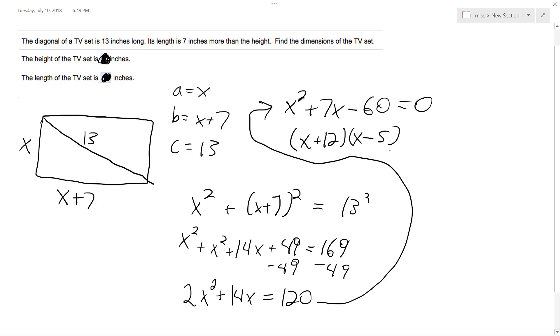because 12 times 5, so x is going to be equal to negative 12 and 5. So it can't be negative 12, we can't have negative values, so it's not that, but it can be 5.